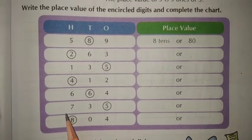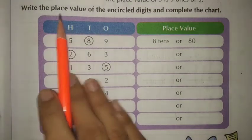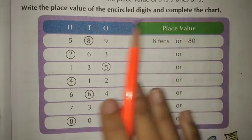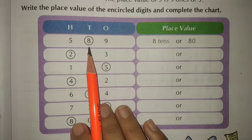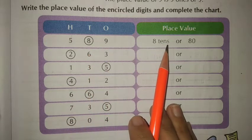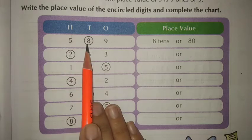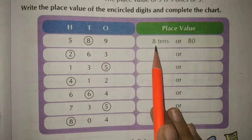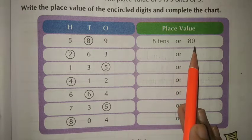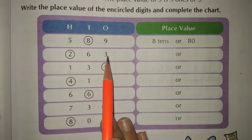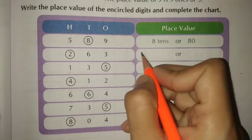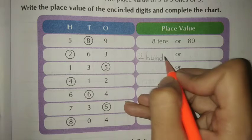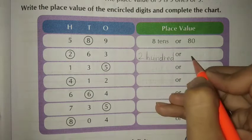Let's see examples. Write the place value of the circled digit and complete the chart. Yaha pe aap logo ko jo bhi number ke upar circle diya hai, uski place value likhni hai. Jaise ki 589 — 8 ke upar circle, so 8 tens and 80. 263 — circle on 2, so write 200.